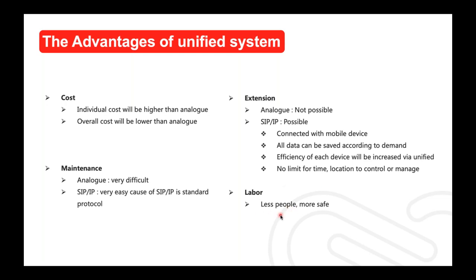Labor is another cost consideration. Before, you needed many security guards, parking office staff, and surveillance monitoring personnel. One apartment might need 100 employees. But if you adapt to SIP IP, you can reduce that by half or more, while being more secure and safe. Better cost, easy maintenance, easy extension, and efficiency for labor management — these are the major reasons why many customers apply the SIP IP system for apartments or buildings.